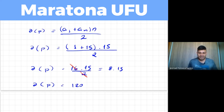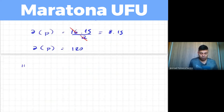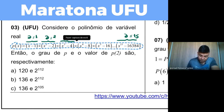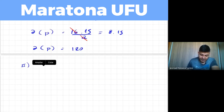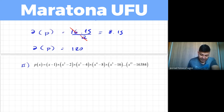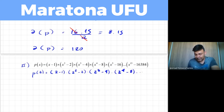Agora a segunda parte: o valor de P(2). P(2) é só trocar o x por 2 em cada fator: (2−1)(2²−2)(2³−4)(2⁴−8)(2⁵−16)···(2^15 − 16384). Calculando cada fator: 2−1=1, 4−2=2, 8−4=4, 16−8=8, e assim por diante.